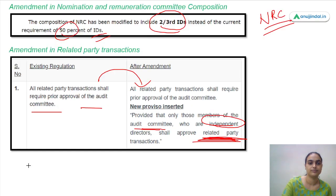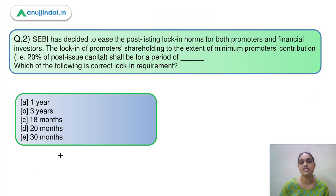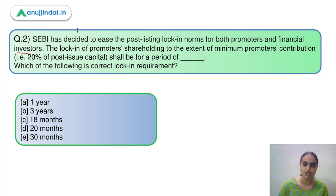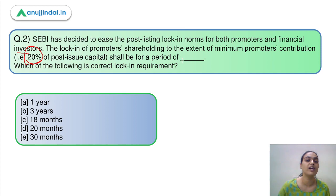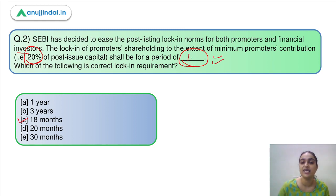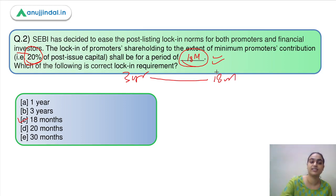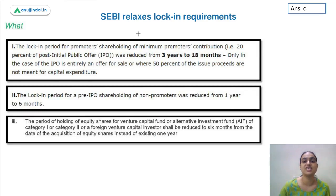Moving on to question number two: SEBI has decided to ease the post-listing lock-in period or lock-in norms for both promoters and financial investors. The lock-in of promoters' shareholding to the extent of minimum promoters' contribution — which is 20 percent of post-issue capital — will now be required for what time period? The answer is option C: 18 months, which was earlier three years.